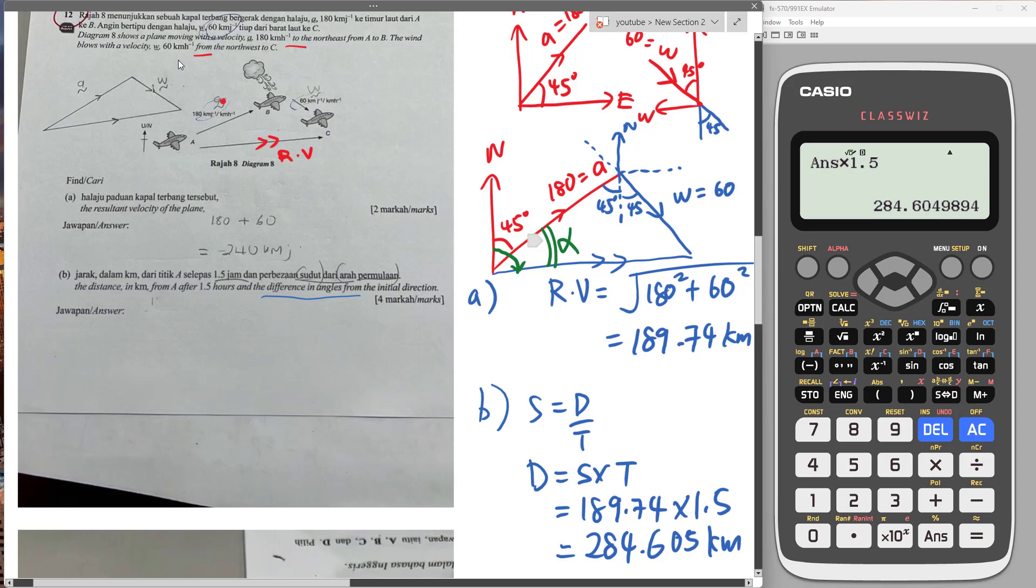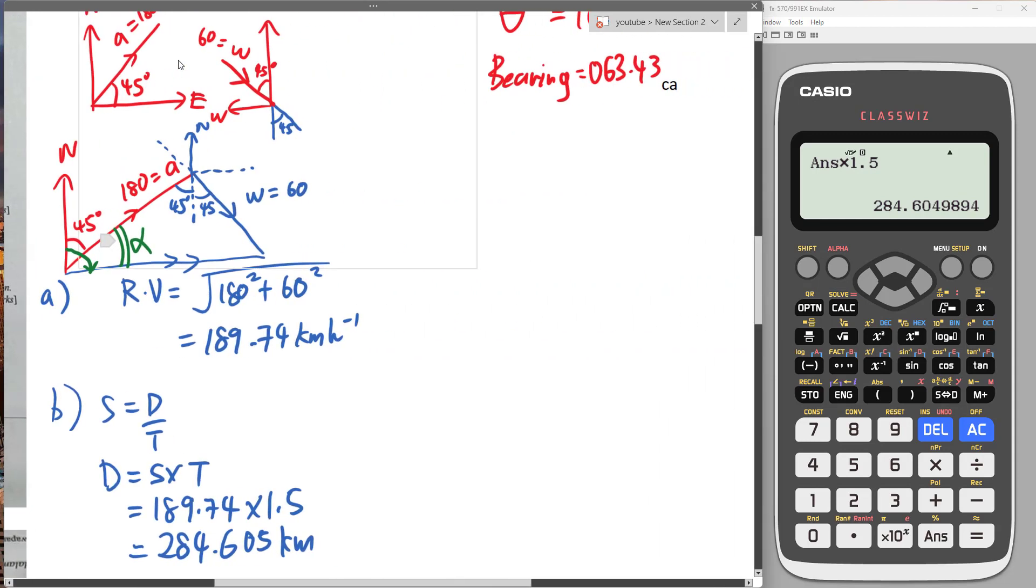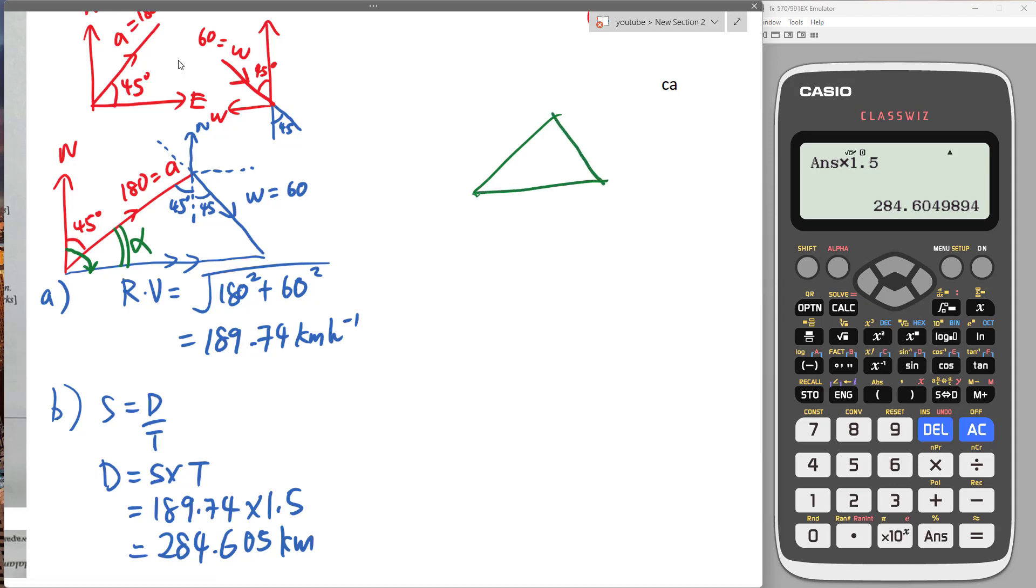My logic is I just want to find alpha. If you see carefully, this is a right angle triangle. I can draw it out to give you an idea. This is 90 degrees, this is 60, this is 180, and we already found this is 189.74. Since you have all the sides and you want to find alpha, you can use sine, cosine, or tangent.